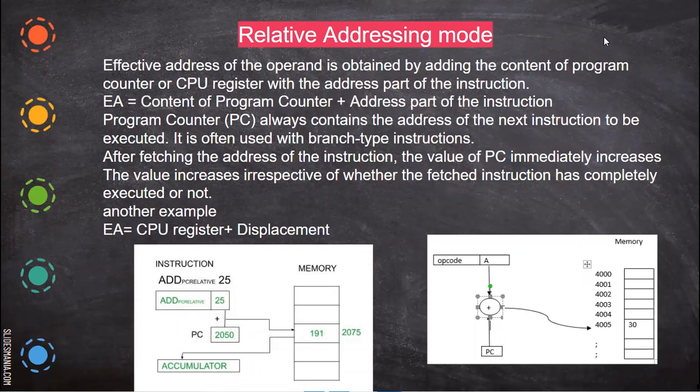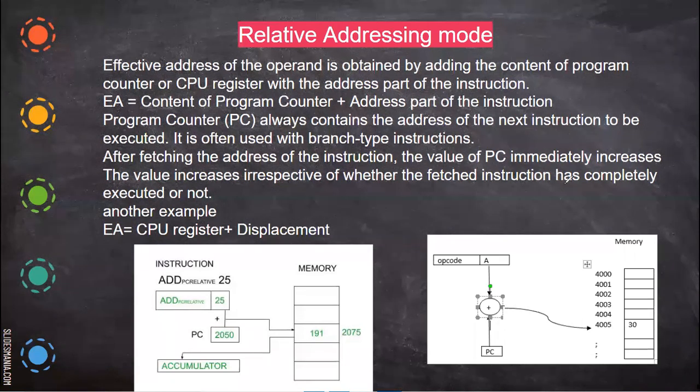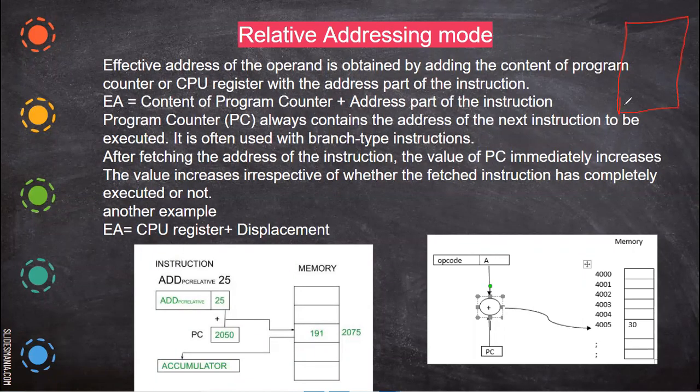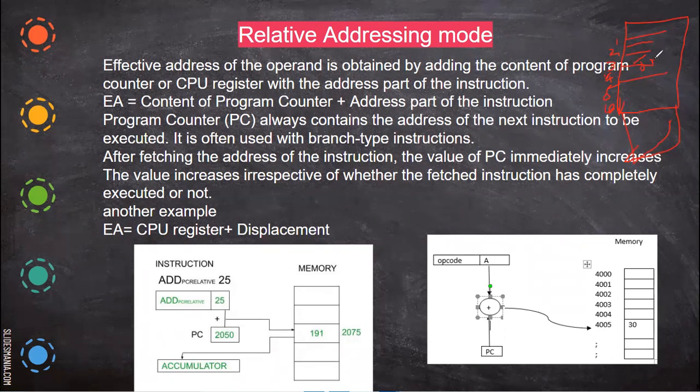Here the relative addressing mode, for example, let us consider this is a location and we have written some problems. At some point of time, imagine this is location 2, 3, 4, 5, 6, and so on. Now, there is a jump statement.